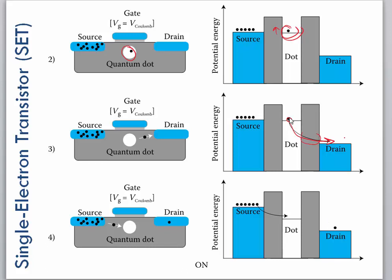When that electron leaves the quantum dot, then this potential energy is again lowered, and it allows the next electron to tunnel into the quantum dot, and so on and so forth.